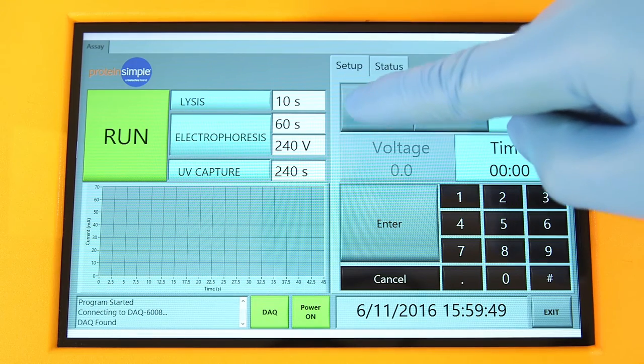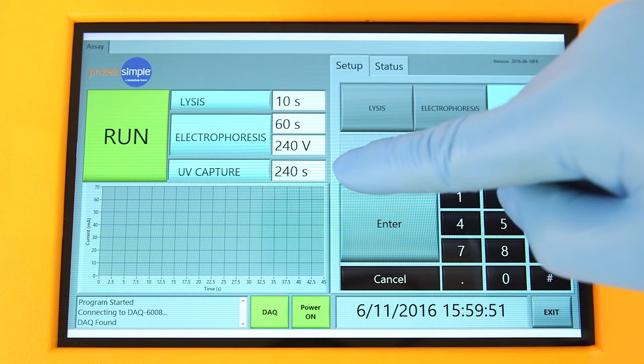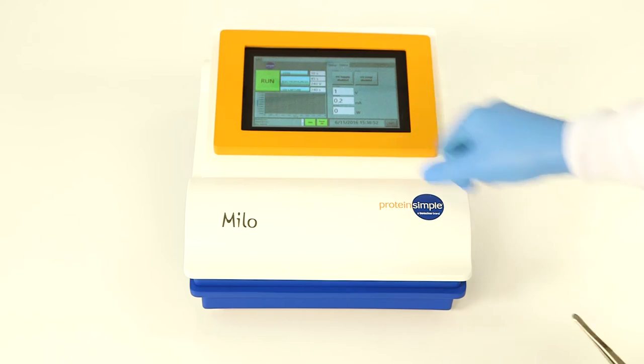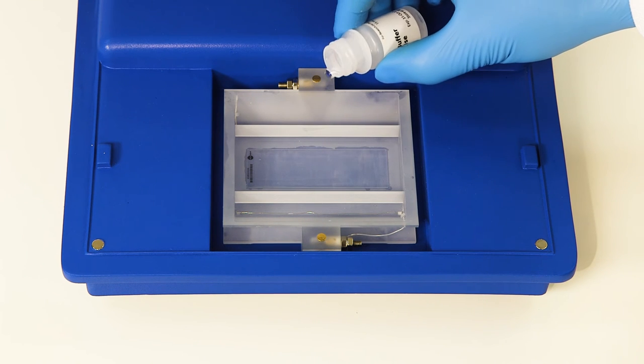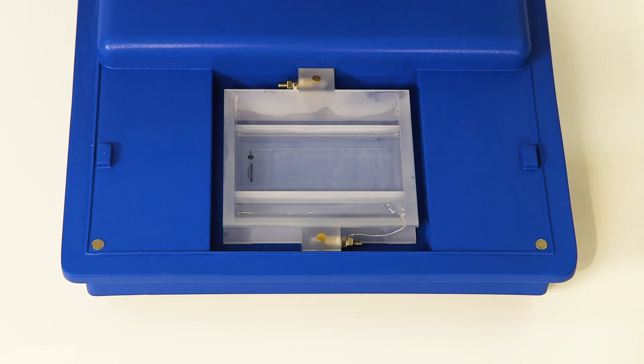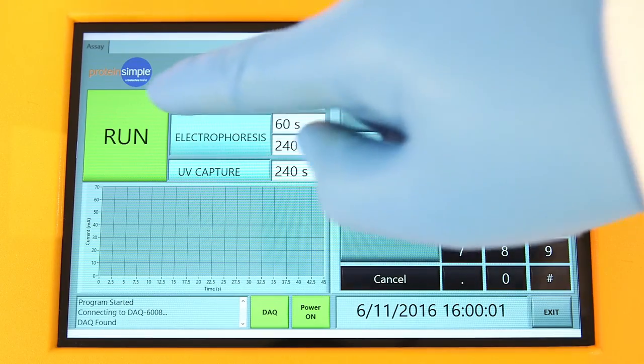We recommend checking your time parameters one last time before adding your lysis buffer to the center of one of the electrophoresis cell reservoirs. After you add all of the lysis buffer remaining in the vial to the reservoir, quickly close Milo's lid and hit run.